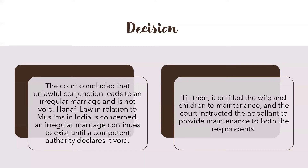The Supreme Court held that a Muslim man who marries a wife's sister during the existence of his marriage with his first wife — such marriage shall be deemed to be irregular and not illegal or void. The apex court upheld the decision passed by the lower courts and held that the unlawful marriage would still subsist and the Muslim man shall be liable to pay maintenance for his wife until his marriage is declared void by a competent court. The court ordered Chand Patel to pay maintenance within six months from the date of the judgment and was also ordered to pay the respondent's cost of litigation. The court concluded that unlawful conjunction leads to an irregular marriage and is not void. Under Hanafi law, as applicable to Muslims in India, an irregular marriage continues to exist until a competent authority declares it void, and till then it entitles the wife and children to maintenance.